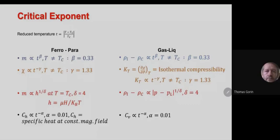A question is raised: does this mean that the ferromagnetic-to-paramagnetic and gas-to-liquid systems share common values of beta and gamma? Exactly — they have common properties close to the critical temperature. And that's called universality. The connection between the two systems is through the correlation length, which diverges in a similar way close to the critical temperature for both systems.